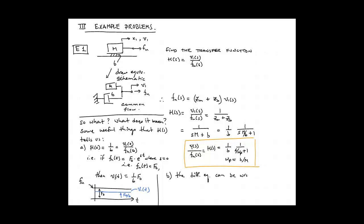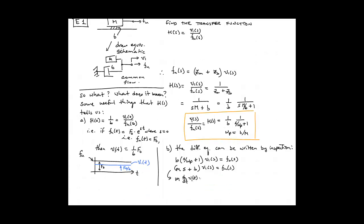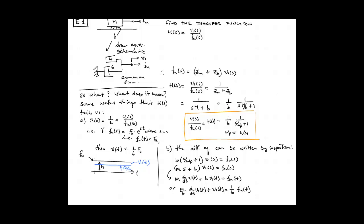Okay, second thing we can learn from the transfer function is we can glean the differential equation. So in this case we simply cross multiply, and every time we see the variable S we will replace that with the derivative d dt, and wherever we see V1 of S we'll replace it with V1 of T, and F sub U of S we'll replace with F sub U of T. And so this is another way to quickly arrive at the differential equation for the system.